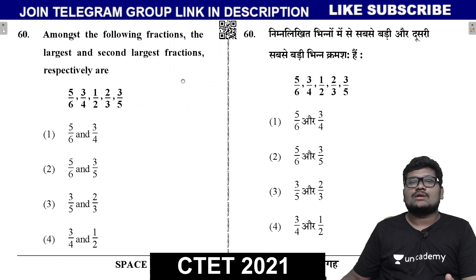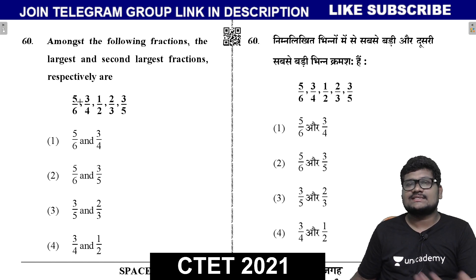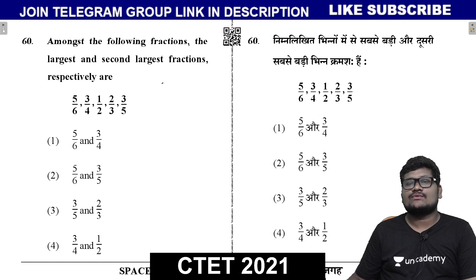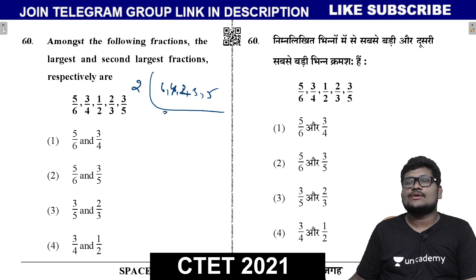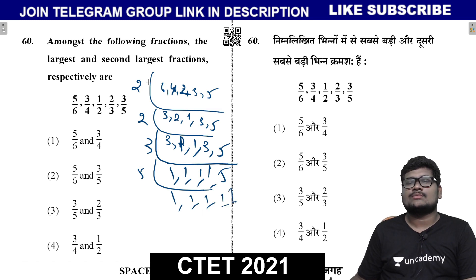Among the following fractions, find the largest and second largest fractions, and the difference between them. The fractions given are 5/6, 3/4, 1/2, 2/3, and 3/5. To compare them, we find the LCM of the denominators 6, 4, 2, 3, 5. The LCM is 2 × 2 × 3 × 5 = 60.